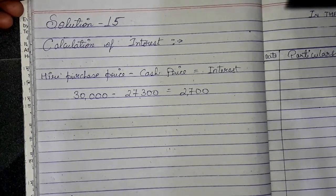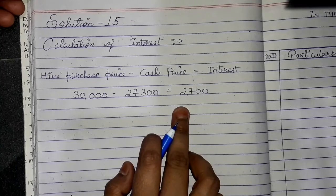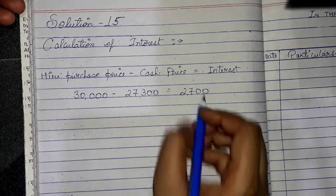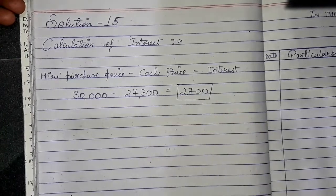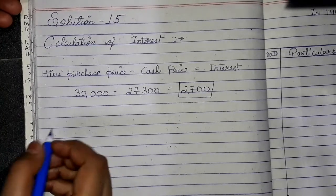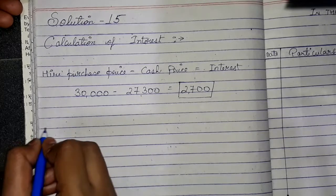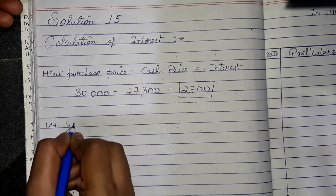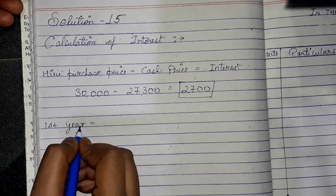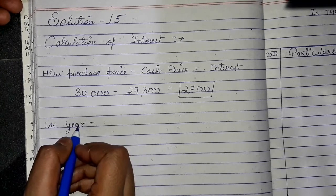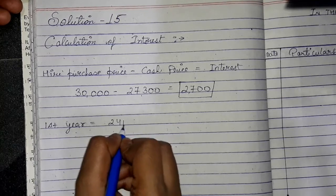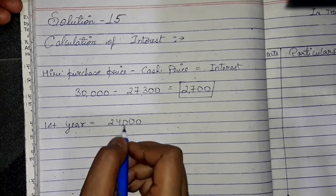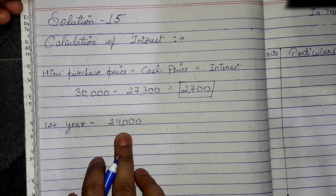Now we will distribute that total interest. In the first year, the hire purchase price gives 24,000, which leaves 6,000 remaining in the first year installment balance.